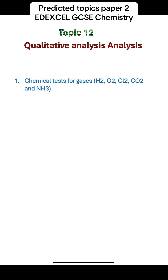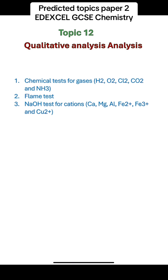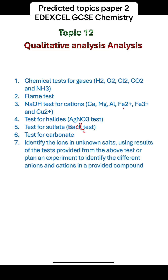Qualitative analysis. You should know and be able to describe the chemical tests for different gases: hydrogen, oxygen, chlorine, carbon dioxide, and ammonia. The flame test for metals, the sodium hydroxide test for cations — including calcium, magnesium, aluminium, iron 2+, iron 3+, and copper 2+ — the silver nitrate test for halides, the barium chloride test for sulfates, and the test for carbonates. You should be able to identify the cation or anion of any unknown salt using these tests, and plan an experiment to identify different anions and cations in a given compound. This is a certain question in your exam, so master all of these chemical tests.